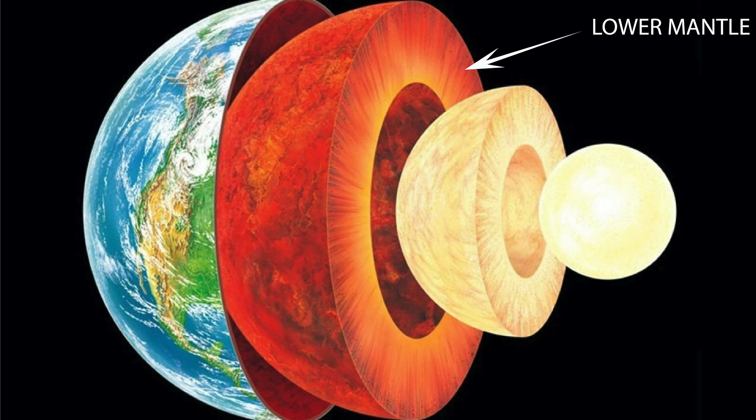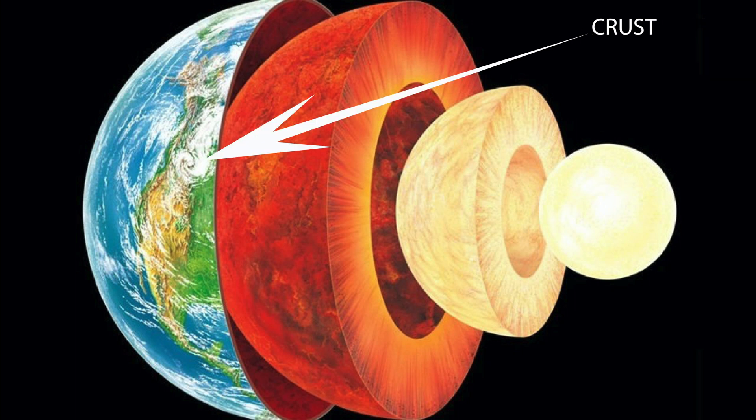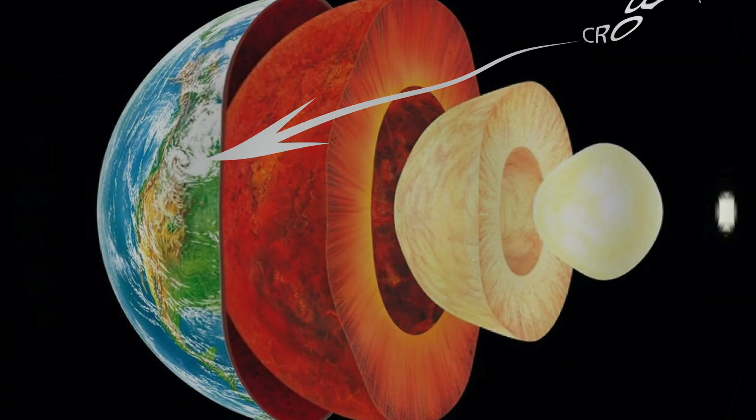This layer is partly melted or semi-molten. Next, the outermost layer is known as Earth's crust. We've now learned about Earth's internal structure.